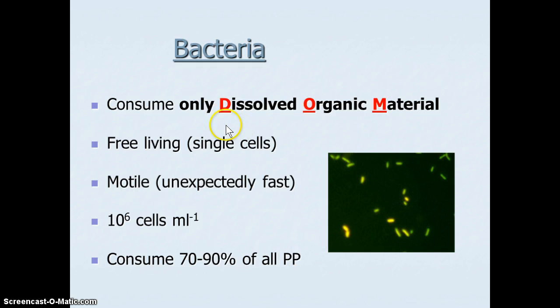It is estimated that 70 to 90% of all primary production eventually becomes a bacterium. That's really because they are the only things that can consume dissolved organic material, and ultimately everything ends up as DOM.